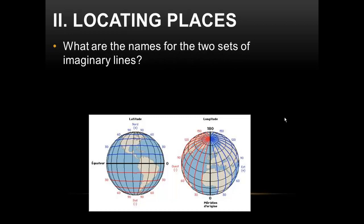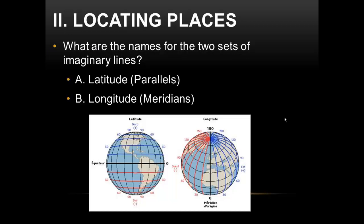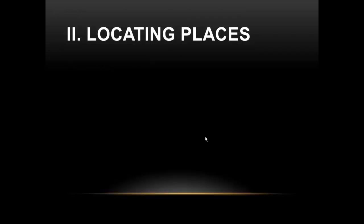Now, locating places on a map — the two sets of imaginary lines you see on the globe are called lines of latitude, or parallels, and lines of longitude, which are called meridians. When you think about latitude, you think about something moving laterally — they go across the Earth side to side. When you think about lines of longitude, think about something being long — lines of longitude move up and down the Earth lengthwise.